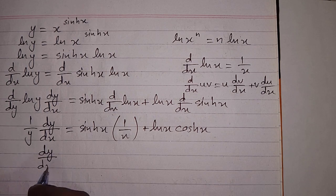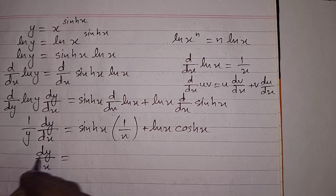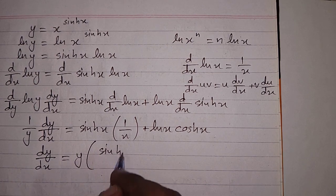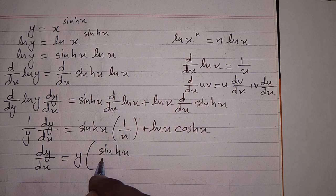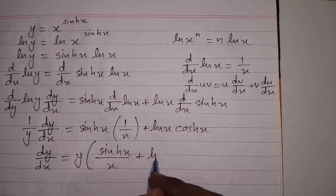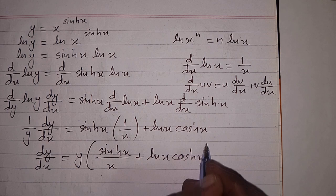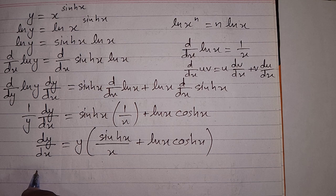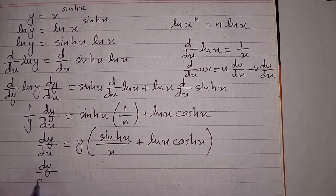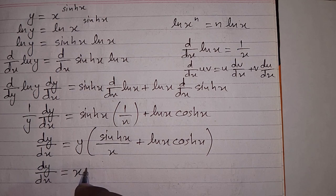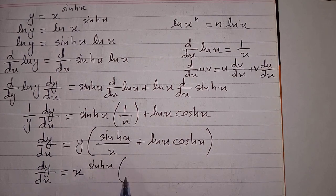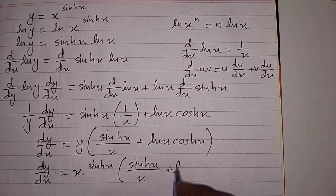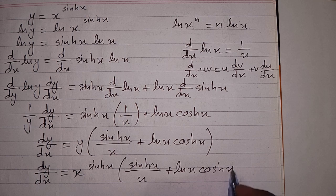Now we multiply both sides by y, so dy/dx equals y times hyperbolic sin x divided by x, plus ln x times hyperbolic cos x. Substituting the value of y, the derivative dy/dx equals x to the power hyperbolic sin x, multiplied by hyperbolic sin x upon x plus ln x times hyperbolic cos x. This is the required answer.